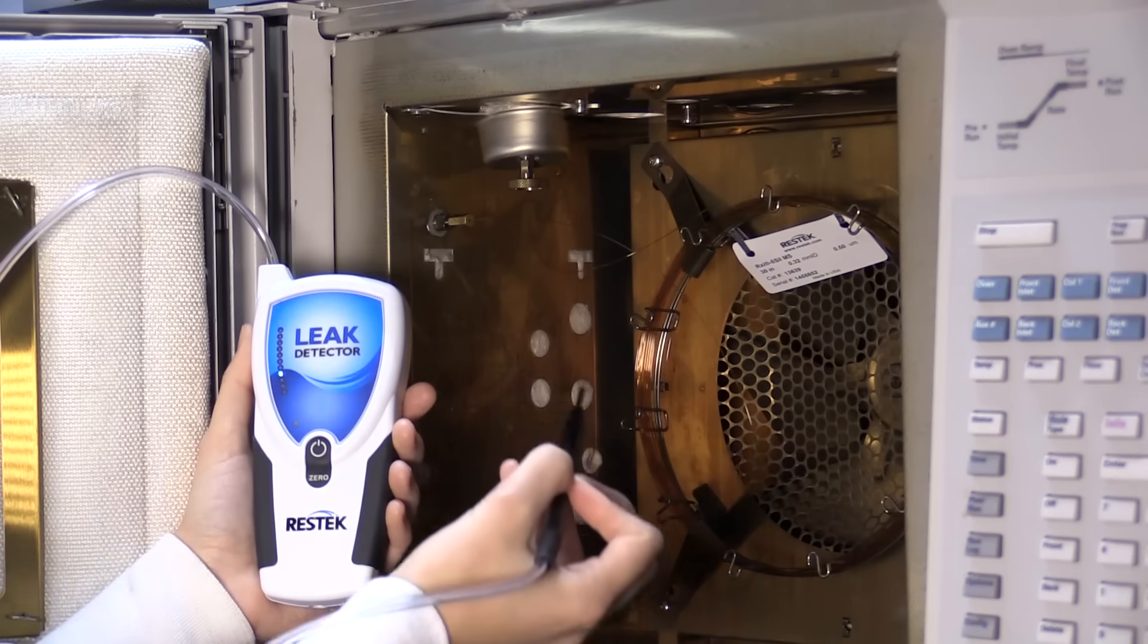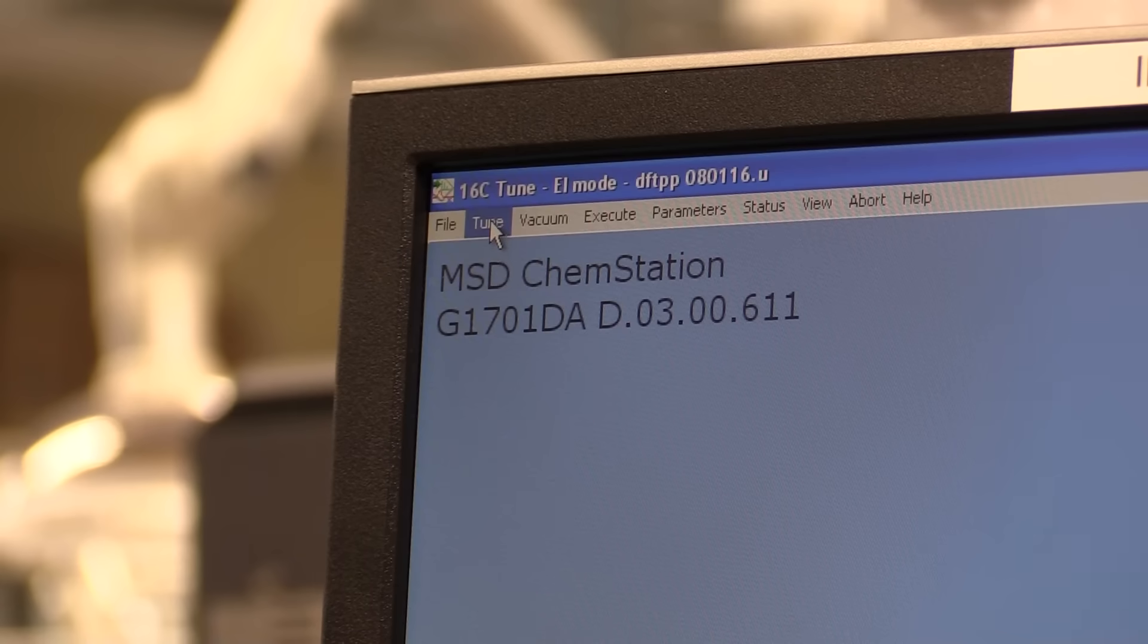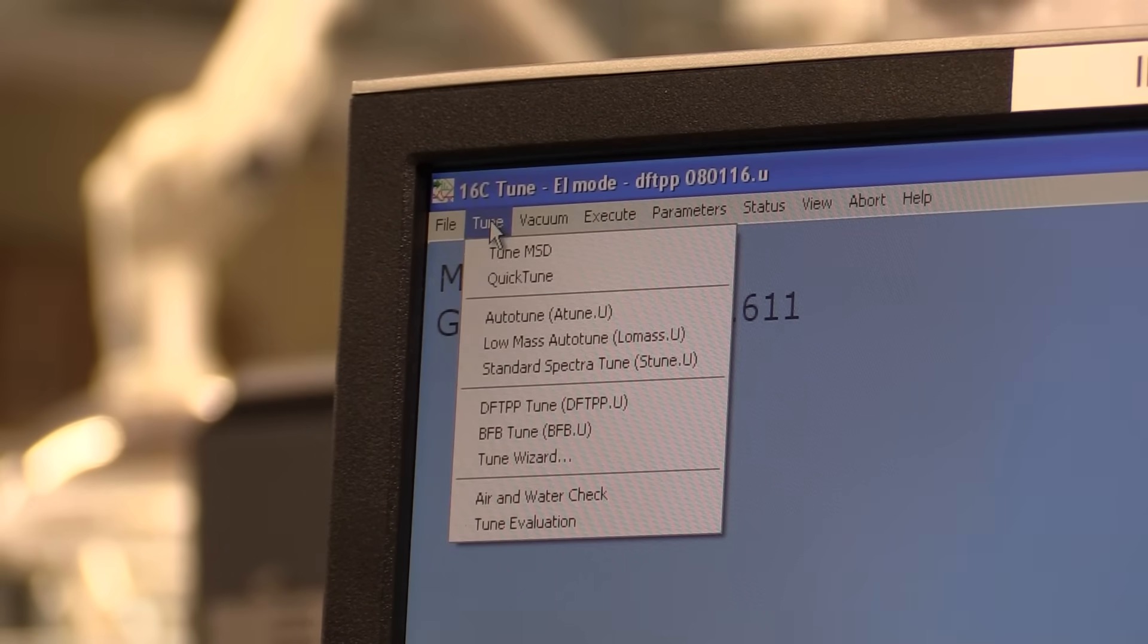We do not recommend the use of a leak detector to check MSD nuts because the vacuum draws in any leaking gases and prevents detection of a leak. Performing an air-water check using your mass spectrometer will indicate if there is a leak in your system.